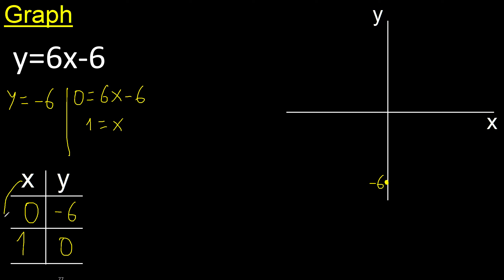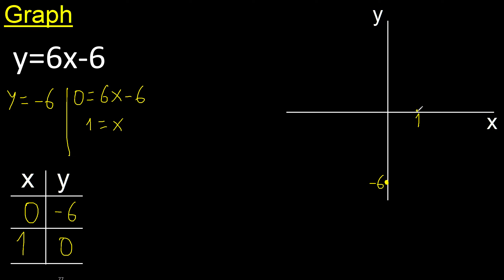x is 1 — positive. Here y is 0; y = 0 is here. The coordinates are 0 and 1, therefore the point is here.